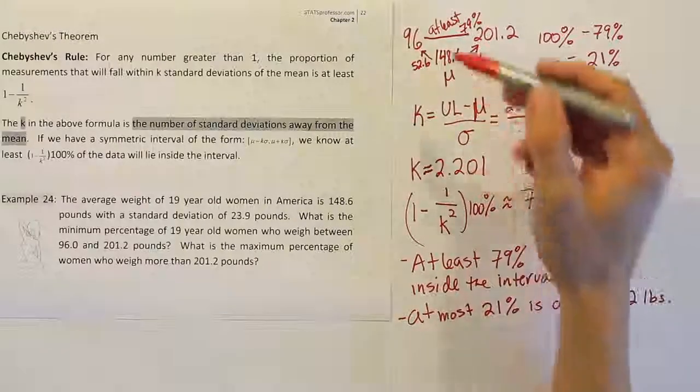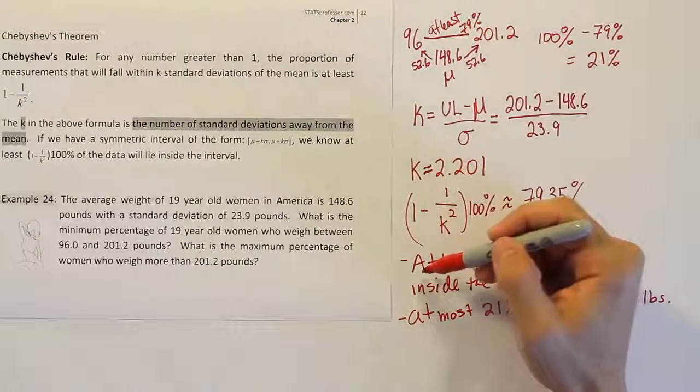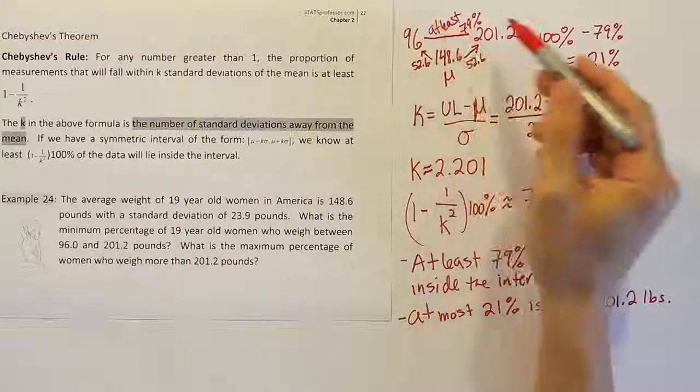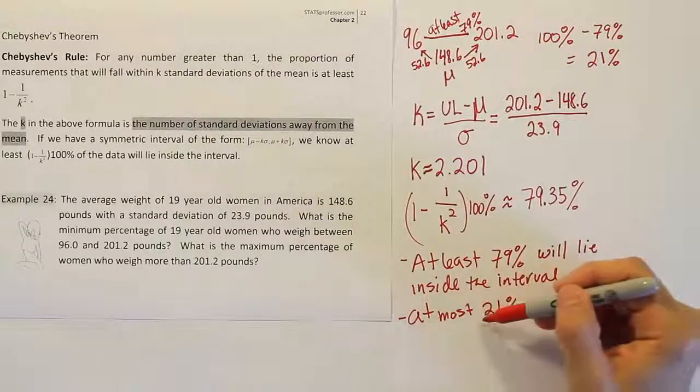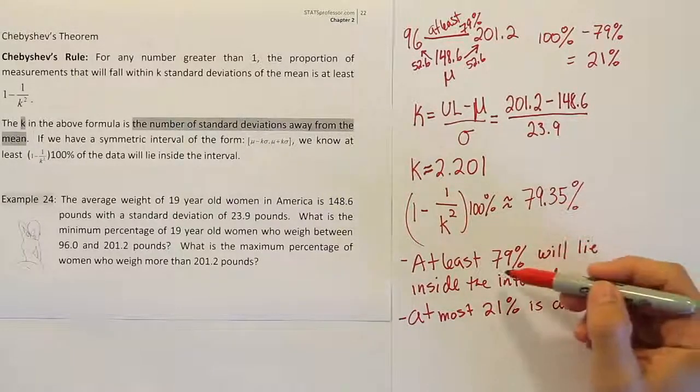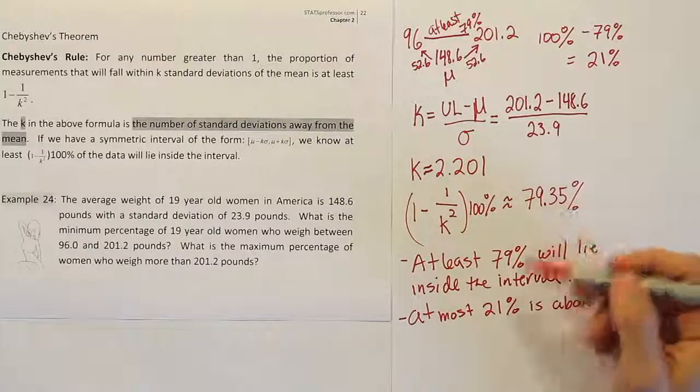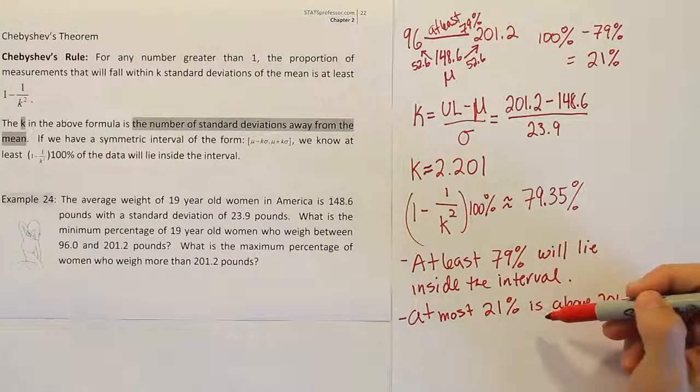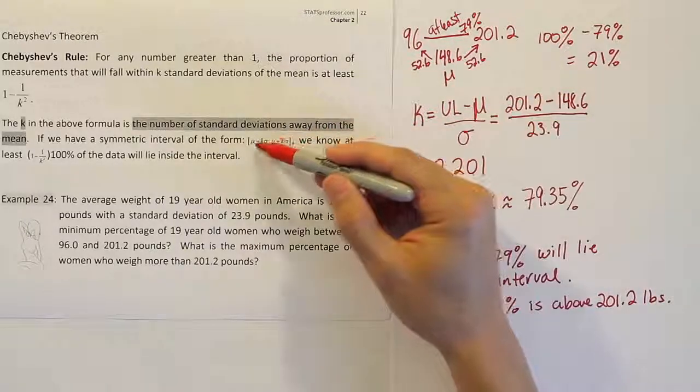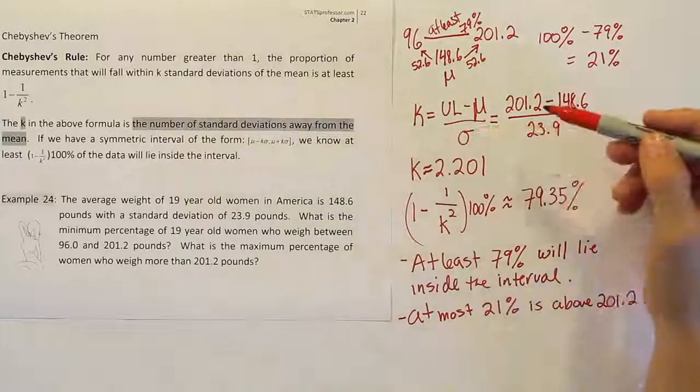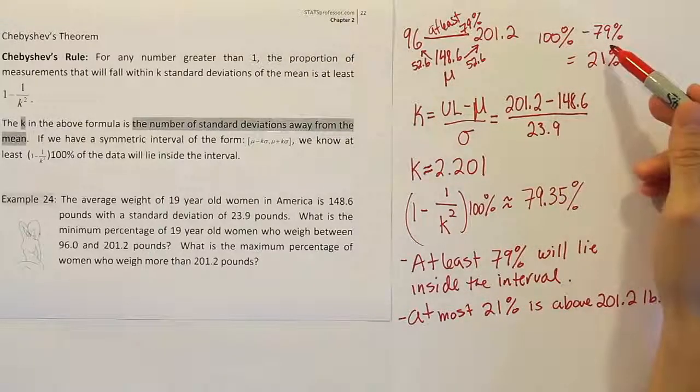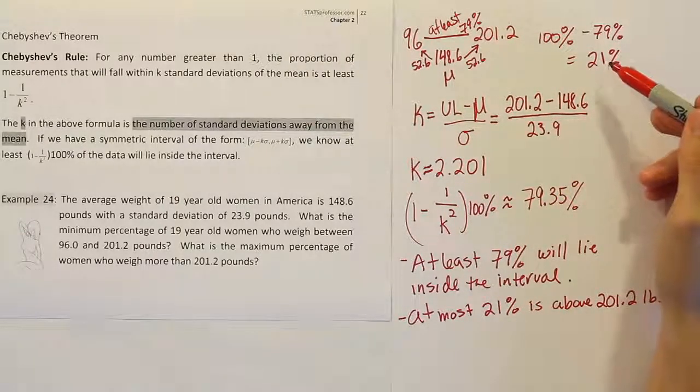Pay attention to the fact that when we talk about what's inside the interval, we use the phrase at least. If we're talking about what amount is outside the interval, we use the phrase at most. And we don't take the percent that comes from the formula directly. We take 100% minus the number that we got from the formula to talk about what's outside the interval. And that's basically because the formula is designed to give us the amount of data inside an interval. So if you want to use it to talk about what's outside an interval, you're going to have to do a little arithmetic to come up with a number that's appropriate for that question.